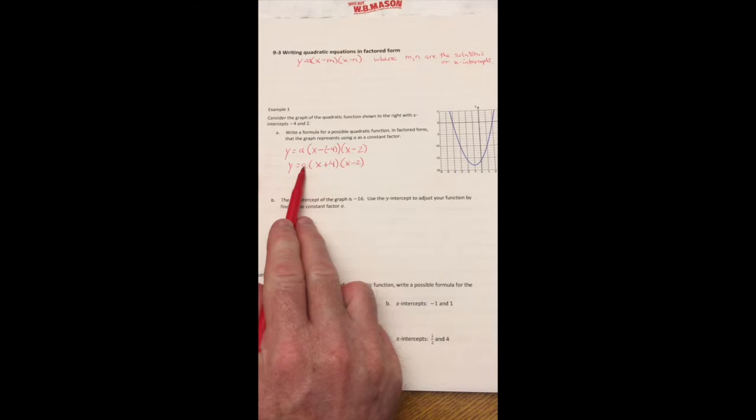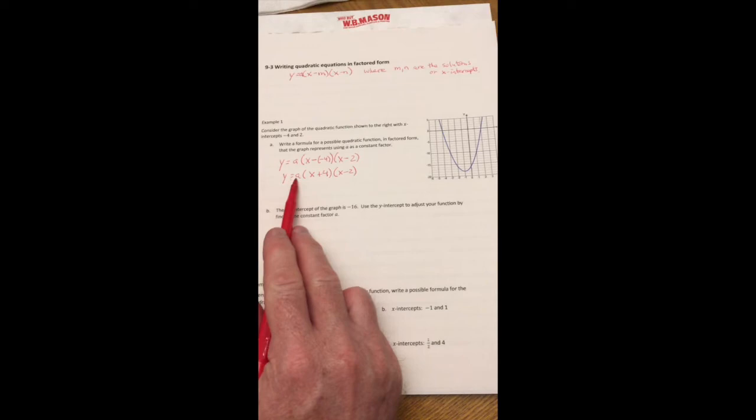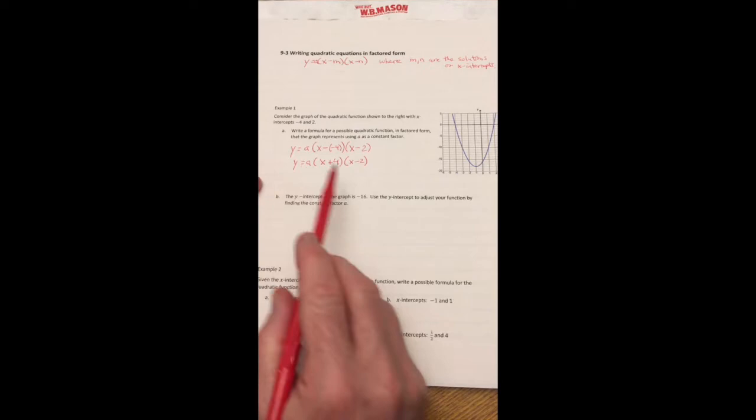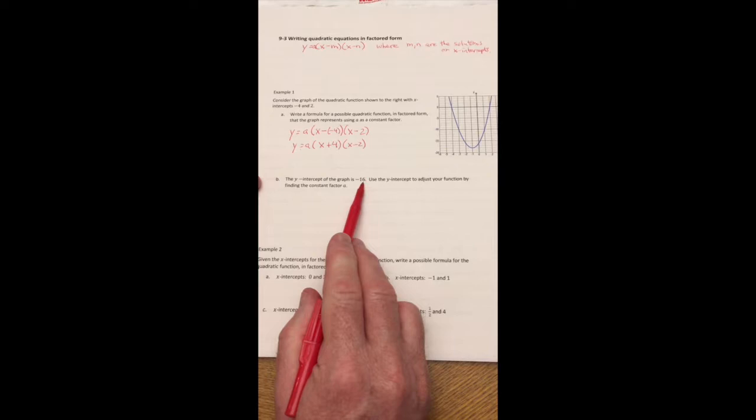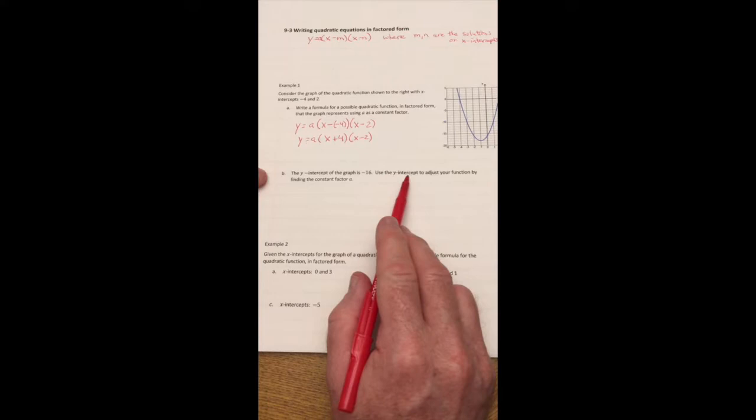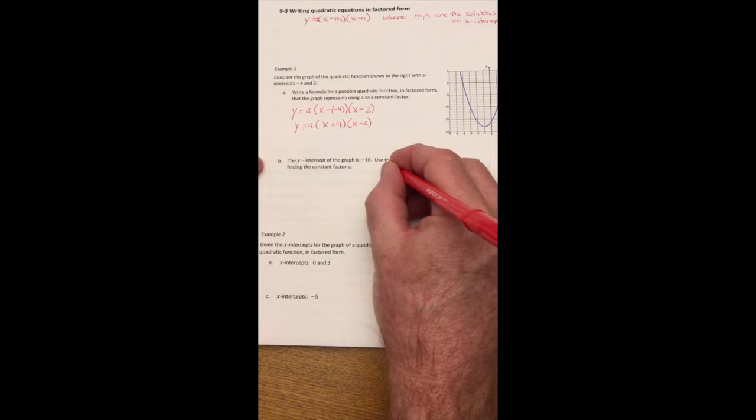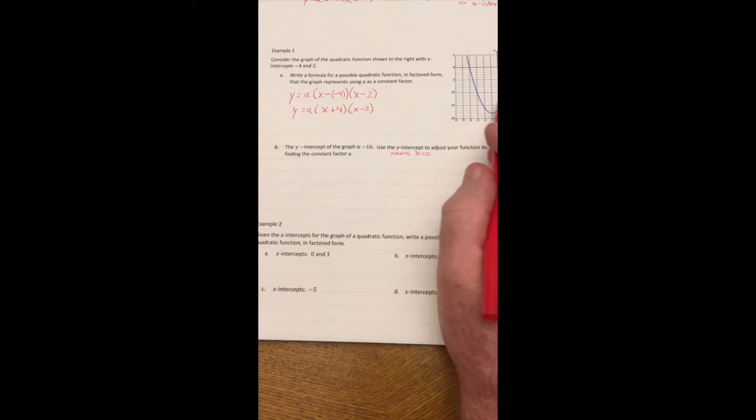In order to find the A for some of these, we're going to have to know what the Y-intercept is because at the Y-intercept, the X value is 0. So the next part of this, in this graph, we can see what the Y-intercept is and we can actually solve it. So for part B, if they tell us the Y-intercept, which in this case is negative 16, I can solve for A. When it says use the Y-intercept to adjust your function, I like to say because of the Y-intercept, that means that X has to equal 0.